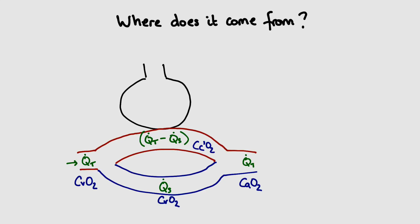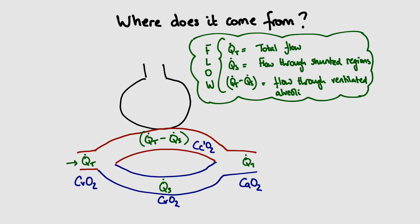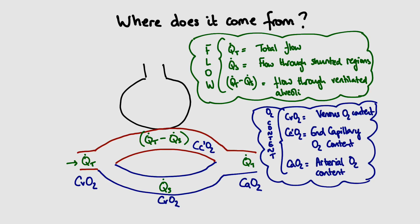In summary, for flow we have Qt (total flow), Qs (flow through the shunted portion), and Qt minus Qs (flow through the unshunted, gas-exchanging portion of the pulmonary circulation). For oxygen content, we have three distinct levels: the lowest is venous oxygen content CVO2 entering the right heart; the highest is fully oxygenated end-capillary content CC'O2; and the combination of both gives us the final arterial oxygen content CaO2.